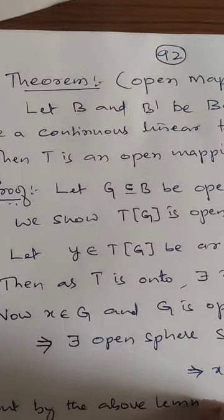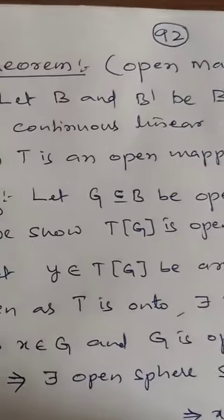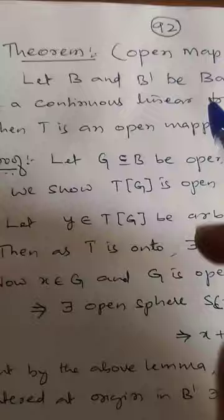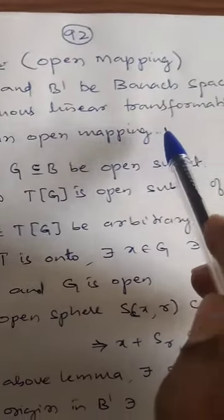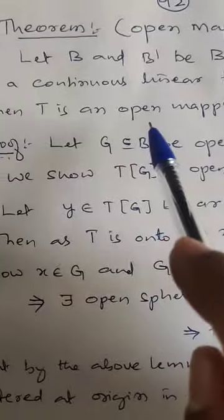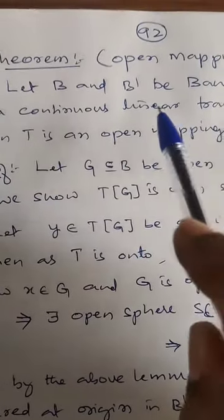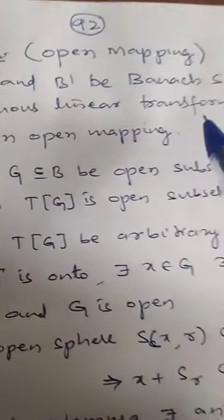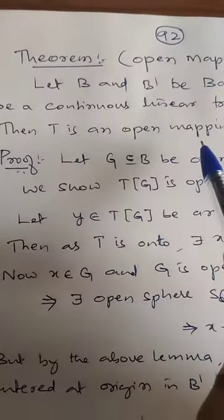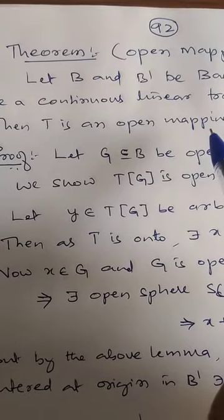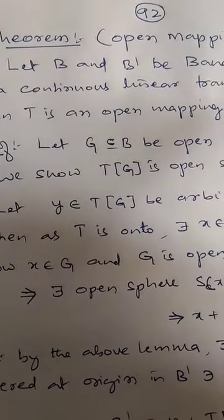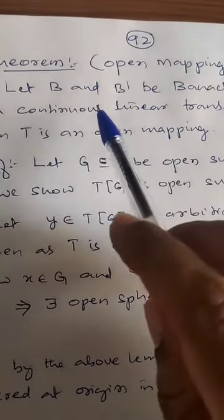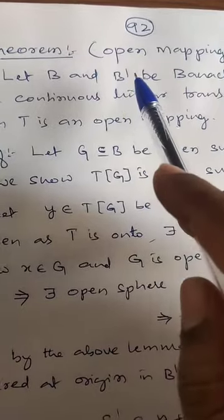Now let us take up the important part of this session: the open mapping theorem. The open mapping theorem states that if B and B' are Banach spaces and T is a continuous linear transformation of B onto B', then T is an open mapping — meaning T maps open sets in B onto open sets in B'.